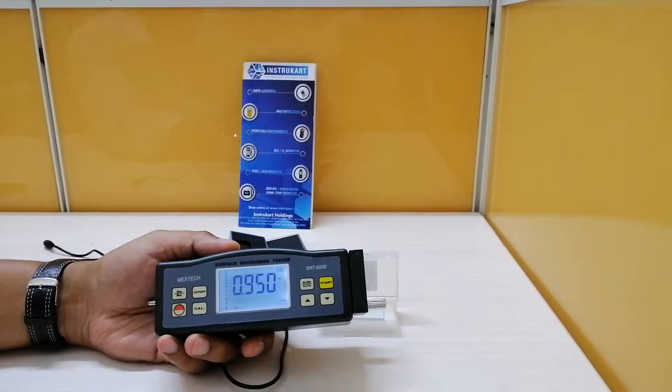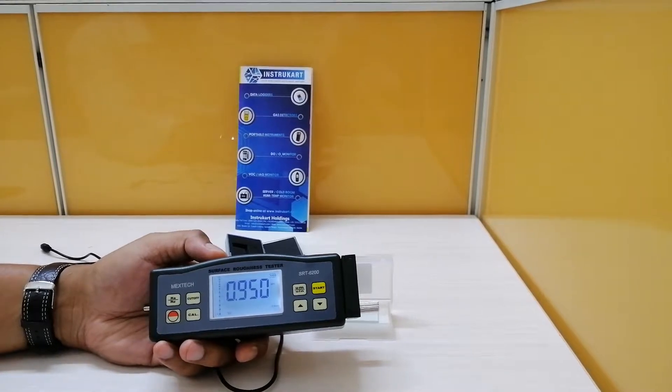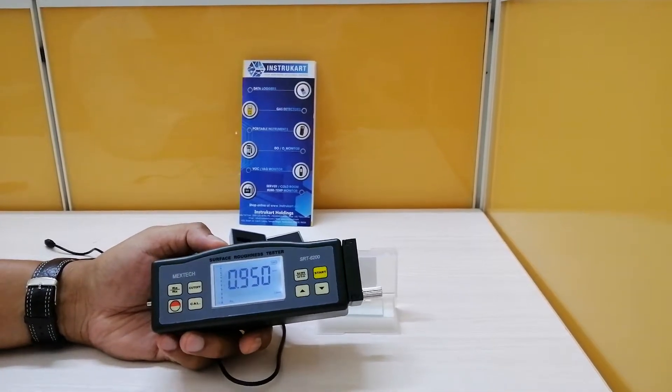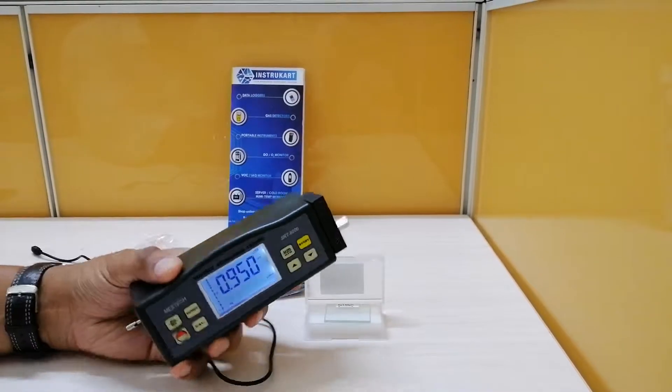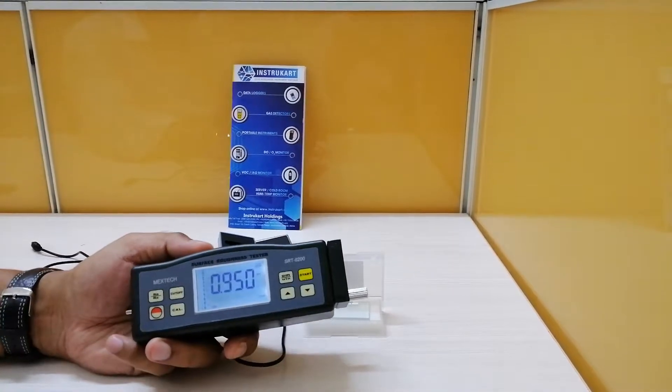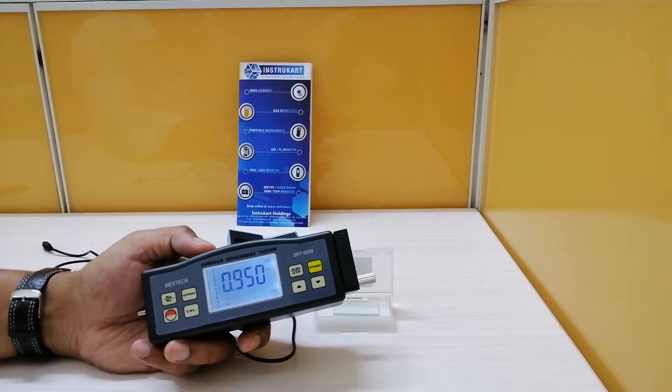Hello and welcome to Instacart Holdings, your worldwide instrument partner. We have a surface roughness tester from Mextech. This is a very rugged device which is used for checking the roughness of a particular surface.